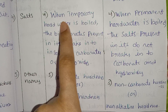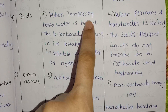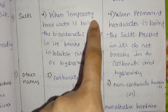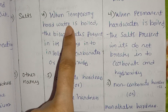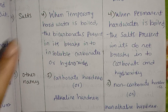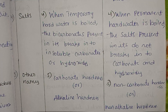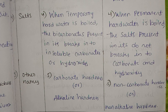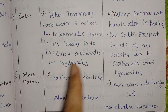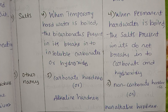When temporary hard water is boiled, the bicarbonates present in it break down into insoluble carbonates or hydroxides, which can then be removed.